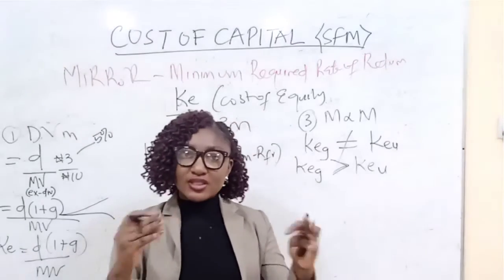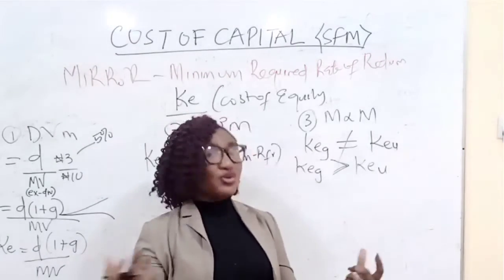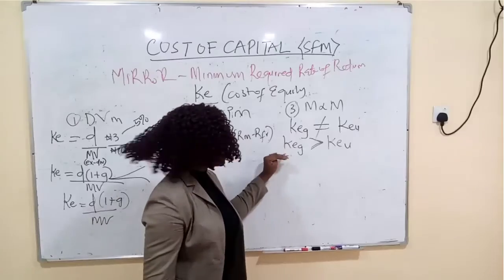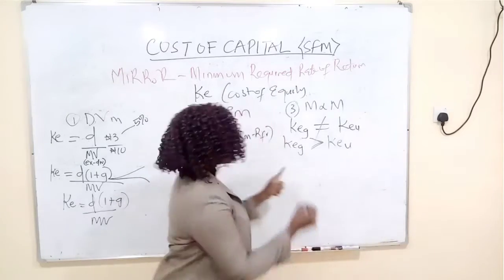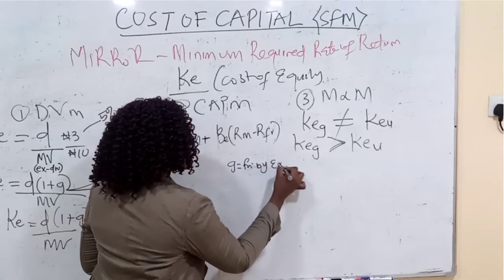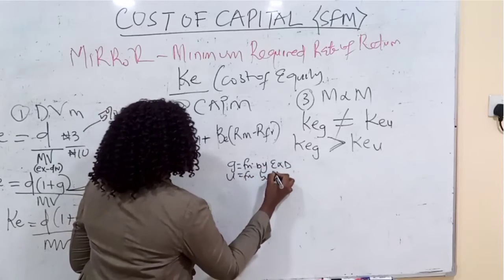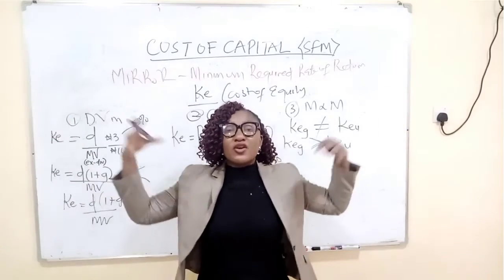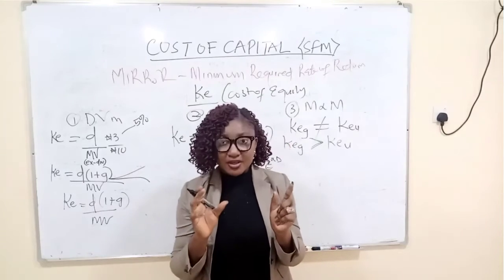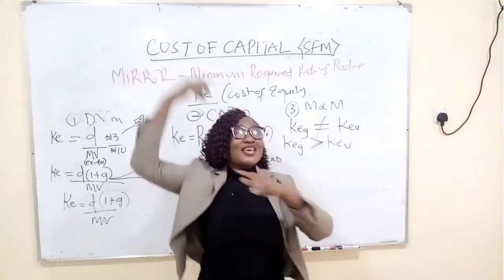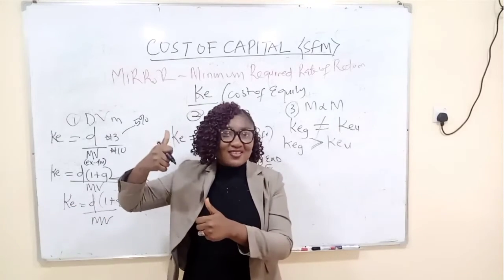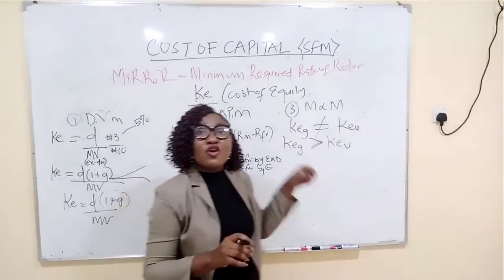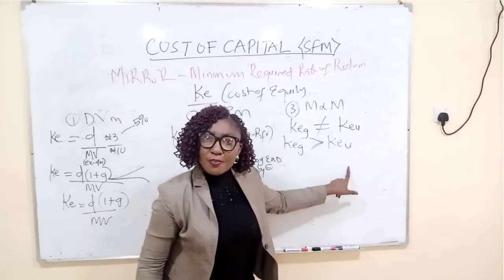They made assumptions such as no tax and dividends will not grow. A geared company is financed by both equity and debt, while an ungeared company is financed by only equity. When a company borrows external funds, the risk is higher, and therefore the cost of capital — the minimum required rate of return — is higher. So the cost of equity of a company that has a debt element will definitely be greater than the cost of equity of a company without a debt element.